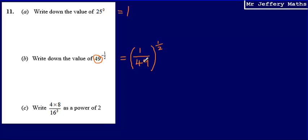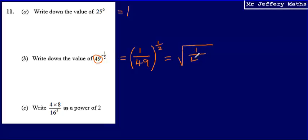Now what we've got is 1 over 49 to the power of a half. When we're raising a power to a half or any fraction, the denominator tells us what root we need to take of the base. Our base now is 1 over 49, so we need to take the square root of 1 over 49. The square root of 1 is 1, and the square root of 49 is 7, so our answer here is 1 over 7.